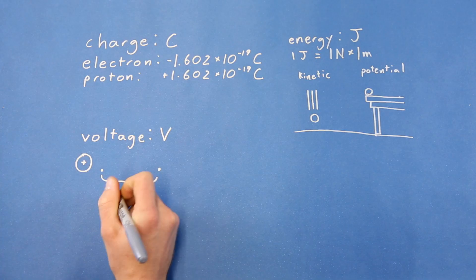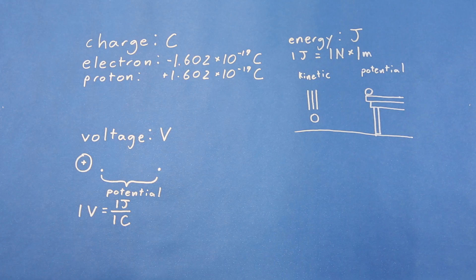Voltage is a measure of electric potential between two points. The unit, volt, is defined as one joule of potential energy per unit charge given in coulombs. Let's explain this with an example.